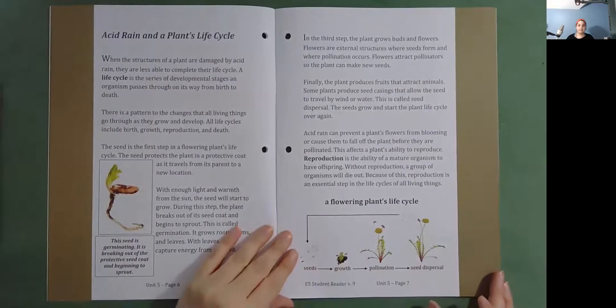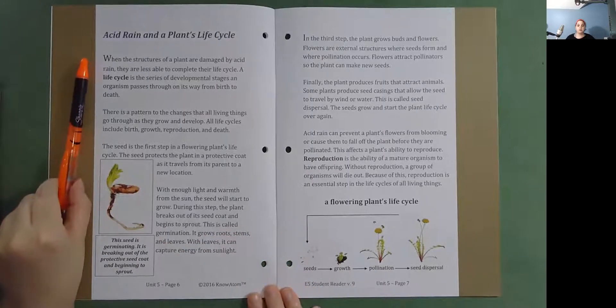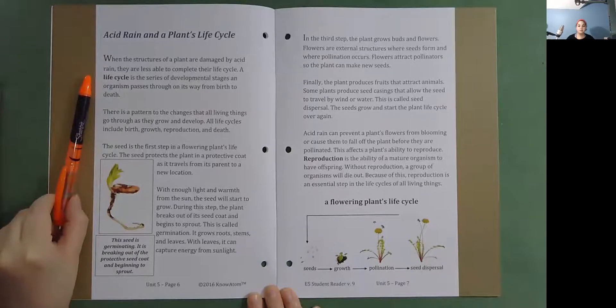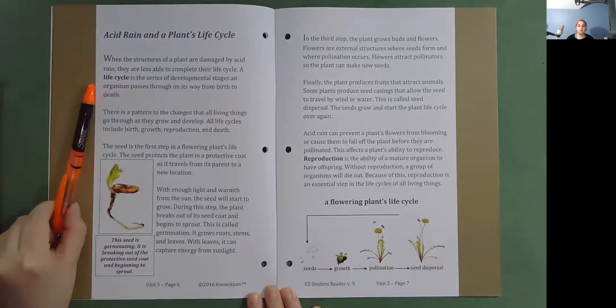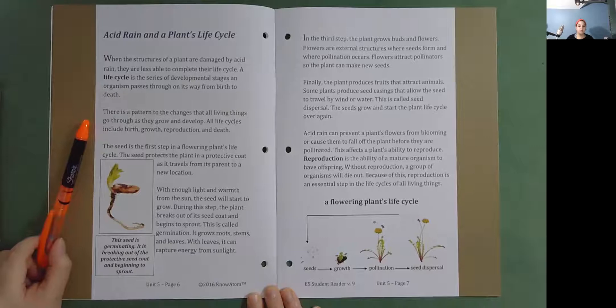Acid Rain and a Plant's Life Cycle. When the structures of a plant are damaged by acid rain, they are less able to complete their life cycle. A life cycle is the series of developmental stages an organism passes through on its way from birth to death. There is a pattern to the changes that all living things go through as they grow and develop. All life cycles include birth, growth, reproduction, and death.